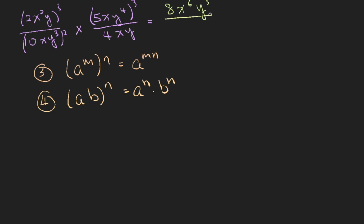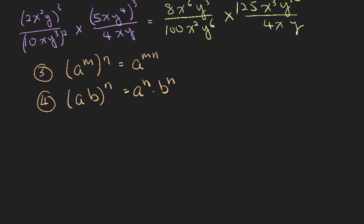Now let's work on the denominator. 10 squared is 100, x squared, y to the power of 6, times 5 cubed is 125, x to the power of 3, y to the power of 12, over 4xy. The next step: simplify 100 and 125 — 125 divided by 100 gives you 1.25, which as a fraction is 5 over 4. Collect everything: 8 times 5 is 40.